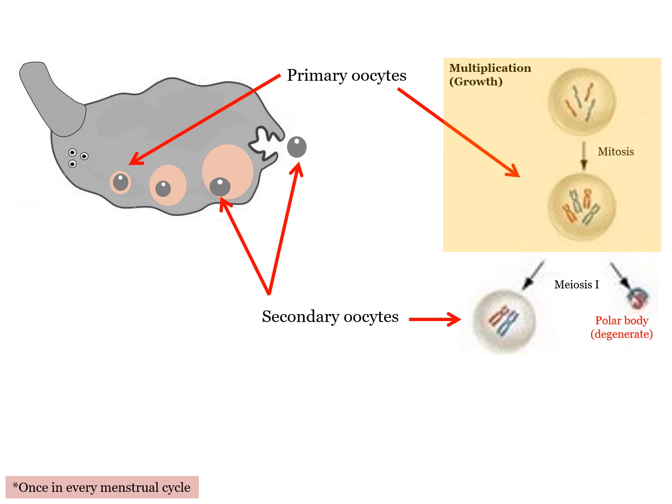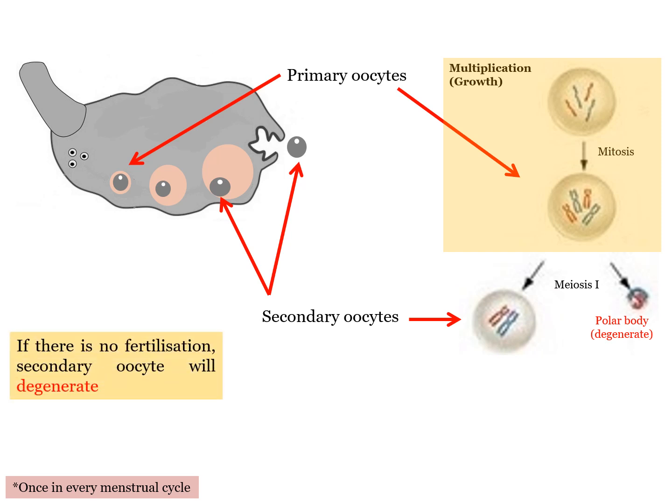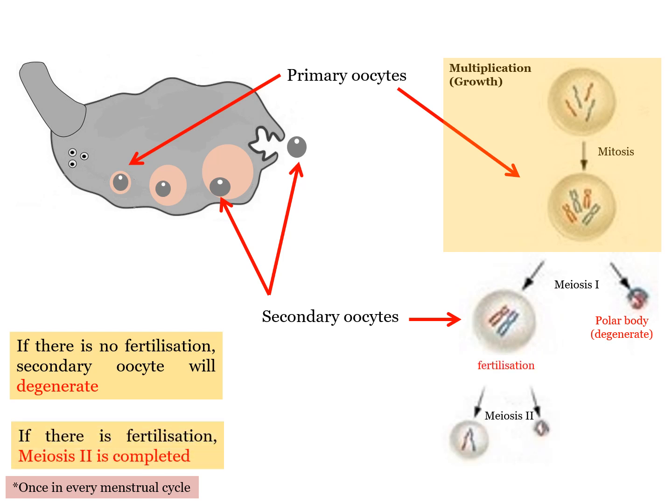To summarize: if there is no fertilization, there will be no meiosis II and the secondary oocyte disintegrates and is discharged during menstruation. If there is fertilization, meiosis II will produce an ovum and a polar body.